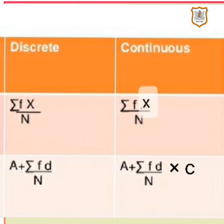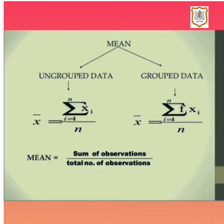In today's video we are going to solve sums related to ungrouped data with the direct method, and grouped data's discrete data sums with the direct method. There are two types of data: ungrouped data and grouped data. For ungrouped data the formula is Sigma X upon n — sum of observations upon total number of observations. For grouped data the formula is mean equals Sigma FX upon n.